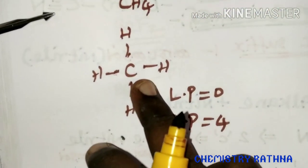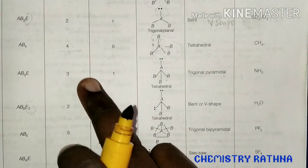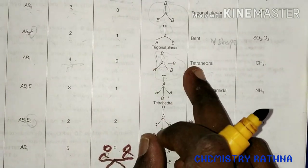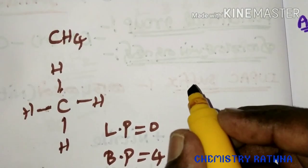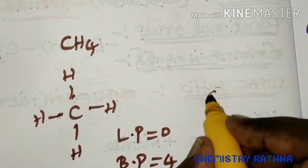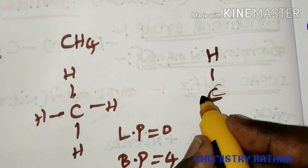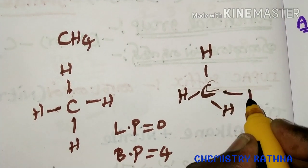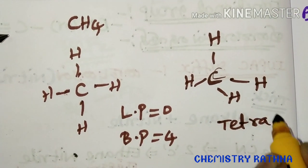Who is CH4 — methane? The lone pair is 0 and the bond pair is 4. With 4 bond pairs and 0 lone pairs, that is tetrahedral. This is the tetrahedral shape. Here is hydrogen, here is hydrogen, here is hydrogen — this is tetrahedral shape.